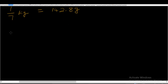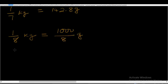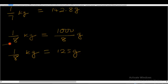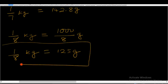Now let's divide by 8: 1/8 kg is equal to 1,000 over 8 grams. So 1/8 kg equals 1,000 divided by 8, which gives 125 grams. Let me emphasize 1/8 kg because most of the time some liquid soap chemicals are measured using this quantity. 1/8 kg is equal to 125 grams.